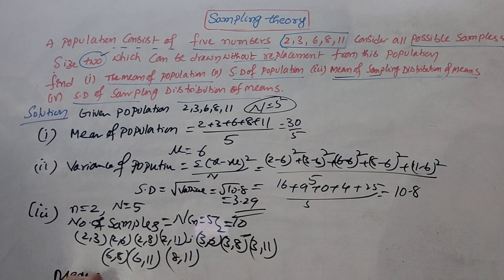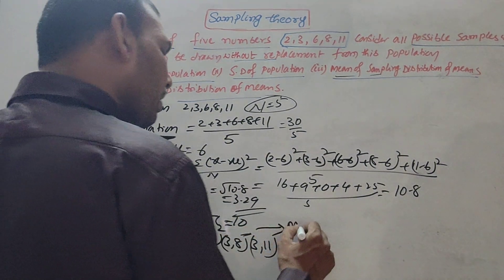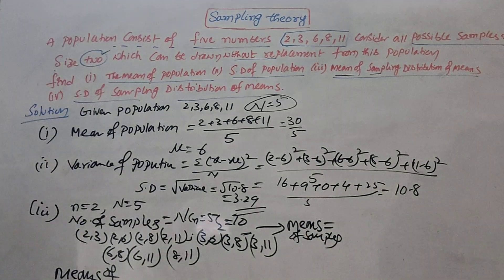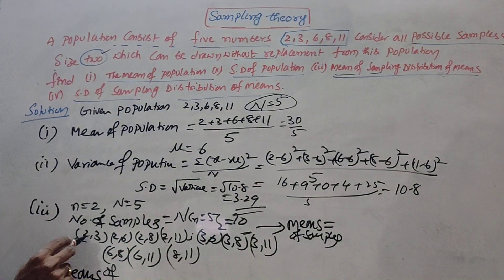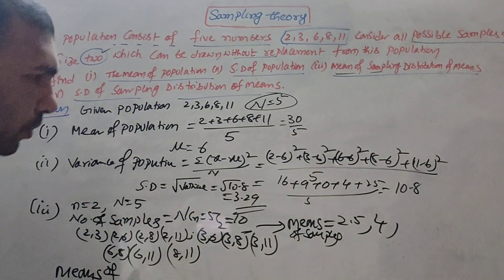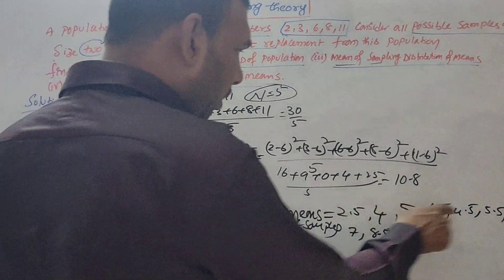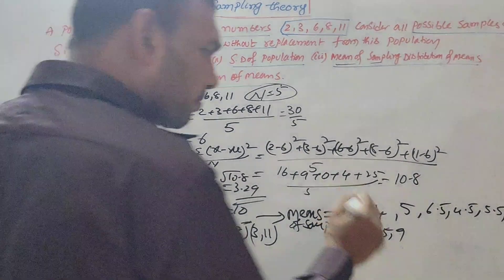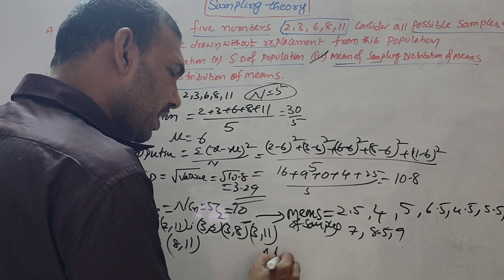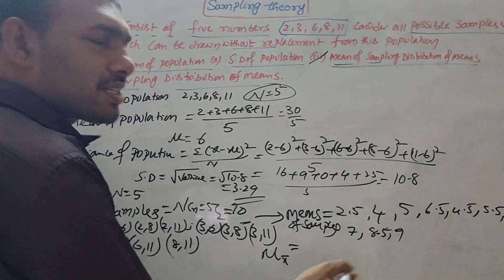Now we need to find the means of these samples. Calculate the mean of each: (2+3)/2 = 2.5, (2+6)/2 = 4, (2+8)/2 = 5, (2+11)/2 = 6.5, (3+6)/2 = 4.5, (3+8)/2 = 5.5, (3+11)/2 = 7, (6+8)/2 = 7, (6+11)/2 = 8.5, (8+11)/2 = 9.5. Calculate all 10 sample means. Then for the mean of sampling distribution of means, add all 10 and divide by 10.